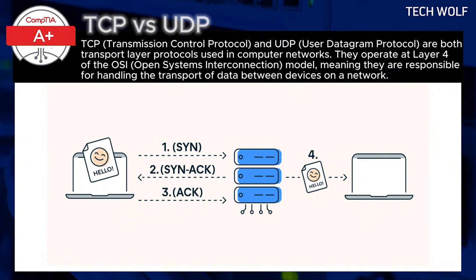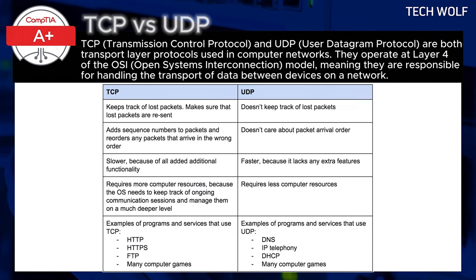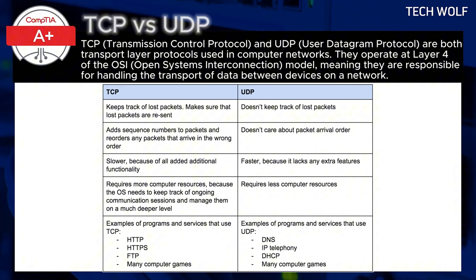Once the three-way handshake is complete, the devices can start exchanging data, and TCP makes sure that all packets — small chunks of data — are delivered correctly and in order. If a packet is lost or arrives out of order, TCP detects this and will retransmit the missing or damaged packets. Error checking is also in place: each packet has a checksum that helps the receiver verify whether the data was corrupted during transmission. If it was, TCP requests the sender to resend it.